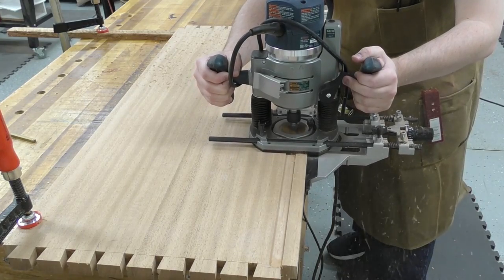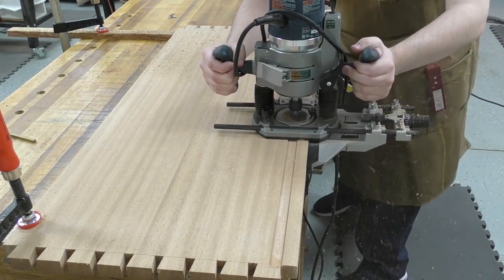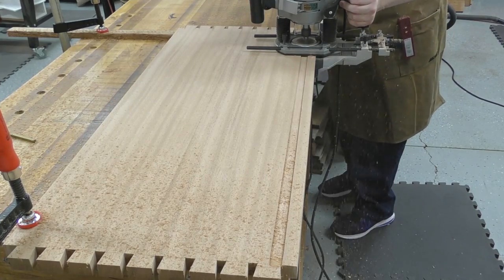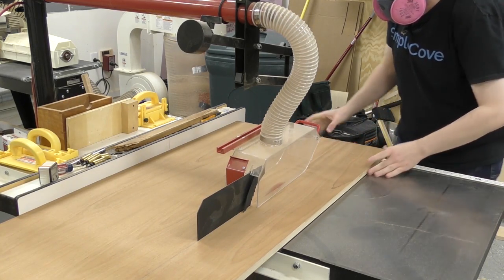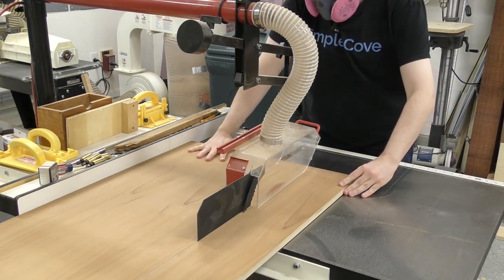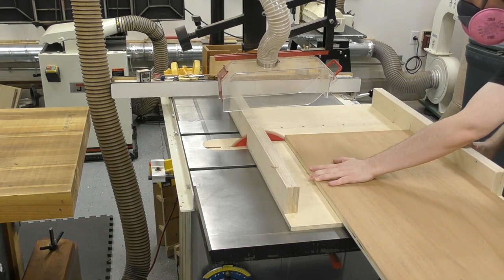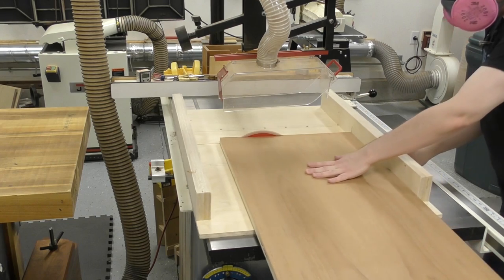Next, I route a three quarter inch groove for the plywood bottom. Since the groove is a quarter inch deep, I route it in two passes. Now that we have the dimensions of what we need to make the bottom panel, I take it over to the table saw and cut the width first. Since this is a fairly large panel, I'm using my cross cut sled to cut it to length.